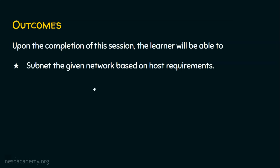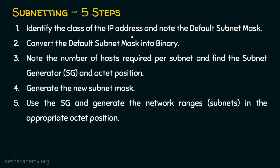Let's see the five steps for doing this subnetting. Step one: identify the class of the IP address and note the default subnet mask. Step two: convert the default subnet mask into binary. Step three: note the number of hosts required per subnet and find the subnet generator and the octet position. Step four: generate the new subnet mask. Step five: using the subnet generator found in step three, generate the network ranges, which are the subnets, created in the appropriate octet position.